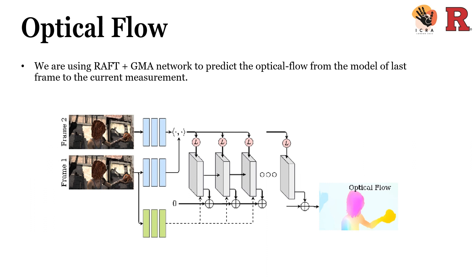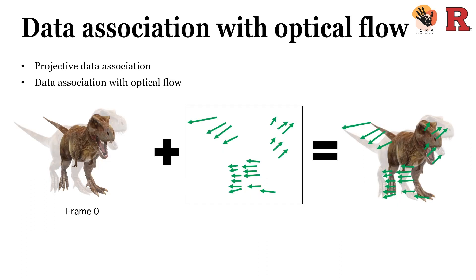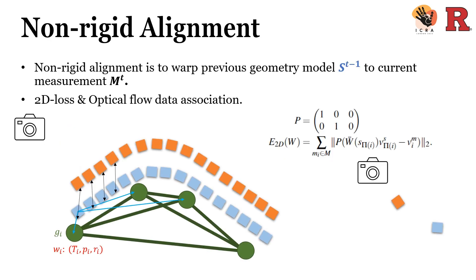We use RAFT plus GMA structure to predict the optical flow from last frame to current frame. This picture provides a demonstration on how this 2D data association looks like. From this example, we can get a rough idea that optical flow loss will be a good complement towards the point-to-plane ICP loss.